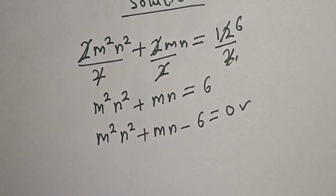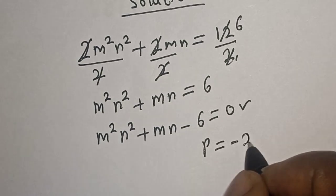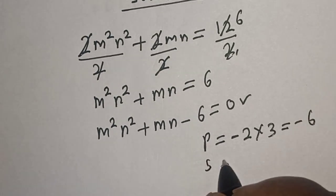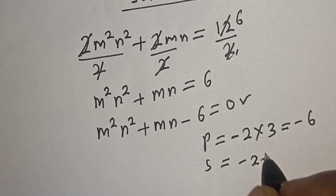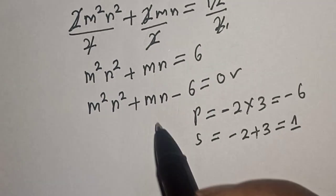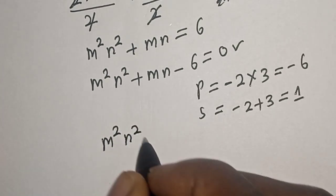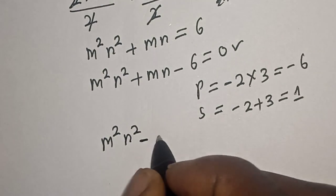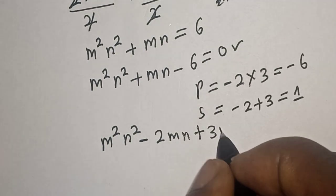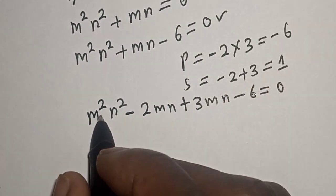This is a quadratic equation. We use the factorization method. The product is -2 × 3 = -6, and the sum is -2 + 3 = 1. So we split the middle term: m²n² - 2mn + 3mn - 6 = 0.